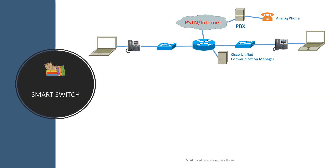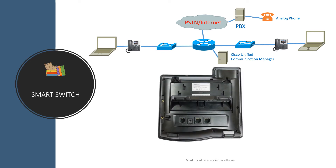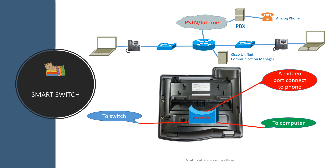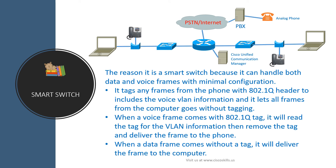Let's now move on to the smart switch under the phone. As you can see, the phone is connected to the switch and the computer is connected to the phone. If we turn the phone upside down, we can see one port connected to the switch and another port connected to the computer, plus a hidden port connected to the phone itself — this is called the smart switch. You can perform certain configurations for the smart switch using the phone, such as assigning the phone to the voice VLAN. The reason it is called a smart switch is because it can handle both data and voice frames with minimal configuration.